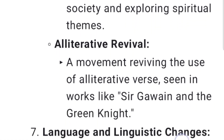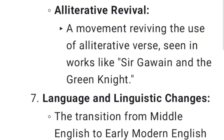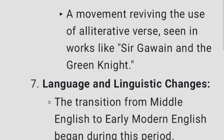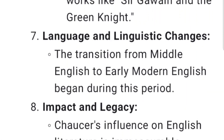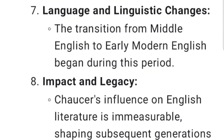The Alliterative Revival was a movement reviving the use of alliterative verse, seen in works like Sir Gawain and the Green Knight. During this period, the transition from Middle English to Early Modern English also began.